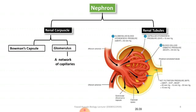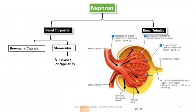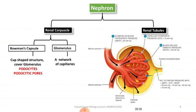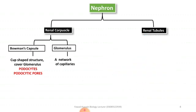Due to the difference in diameter between the afferent and efferent arterioles, pressure is created inside the glomerulus. This pressure is called hydrostatic pressure. The yellow cup-shaped structure surrounding the glomerulus is called Bowman's capsule. The Bowman's capsule is a cup-shaped structure that covers the glomerulus, and filtrate — waste material — enters into the Bowman's capsule through this filtration process.